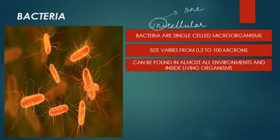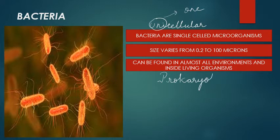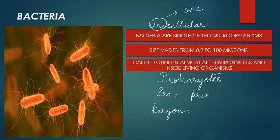Bacteria are said to belong to a specific group of organisms called prokaryotes. If we split the term 'prokaryote' we get two words: 'pro' and 'karyon'.